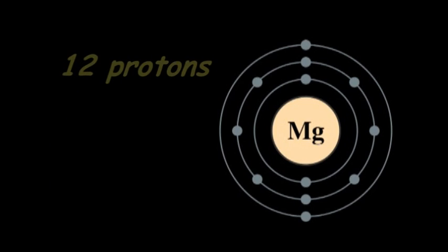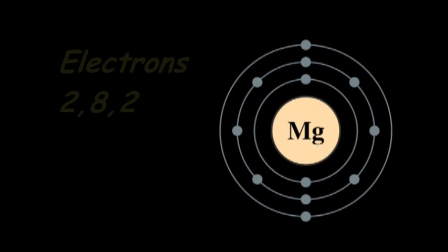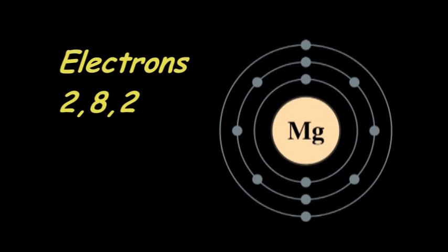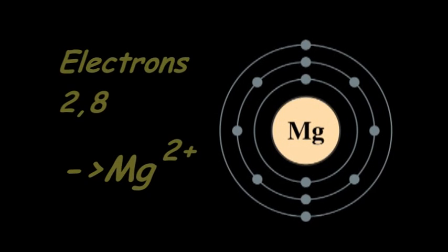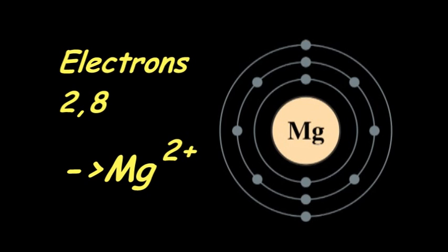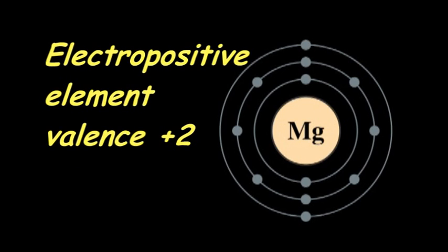Magnesium is element 12, with 12 positive protons in its nucleus balanced by 12 negative electrons. Magnesium is reactive as it needs a full outer electron shell. To achieve this, it gives away its two outer electrons to an element with an almost complete outer shell. Magnesium is an electropositive element with a usual valence or oxidation state of plus 2.